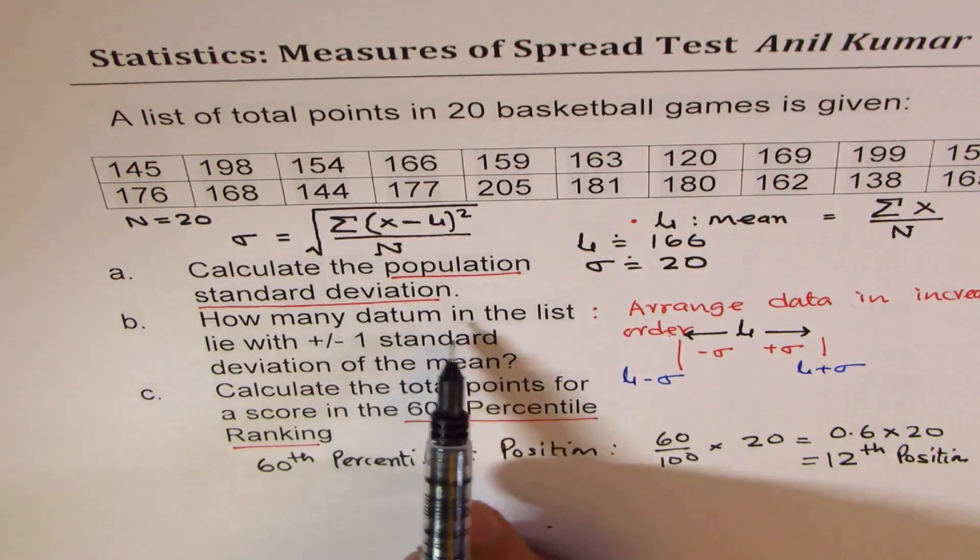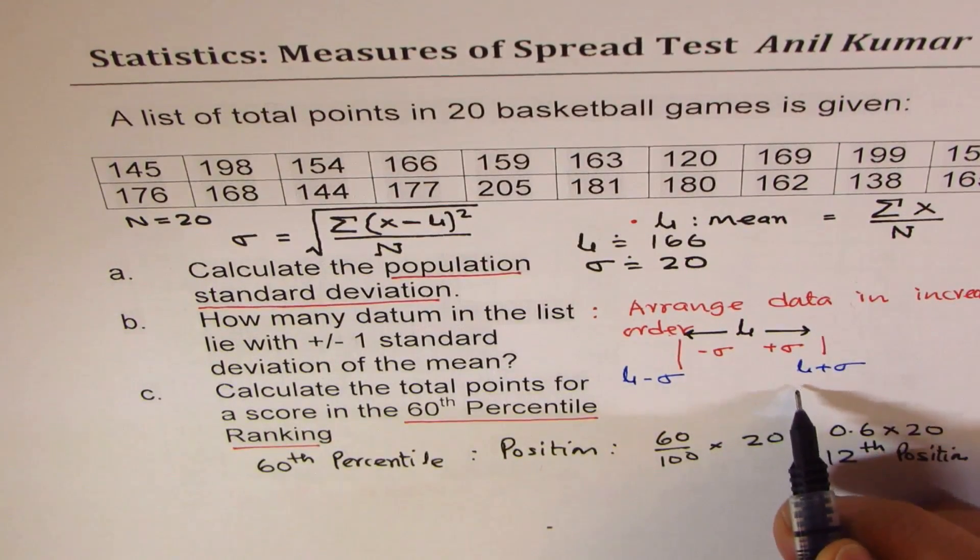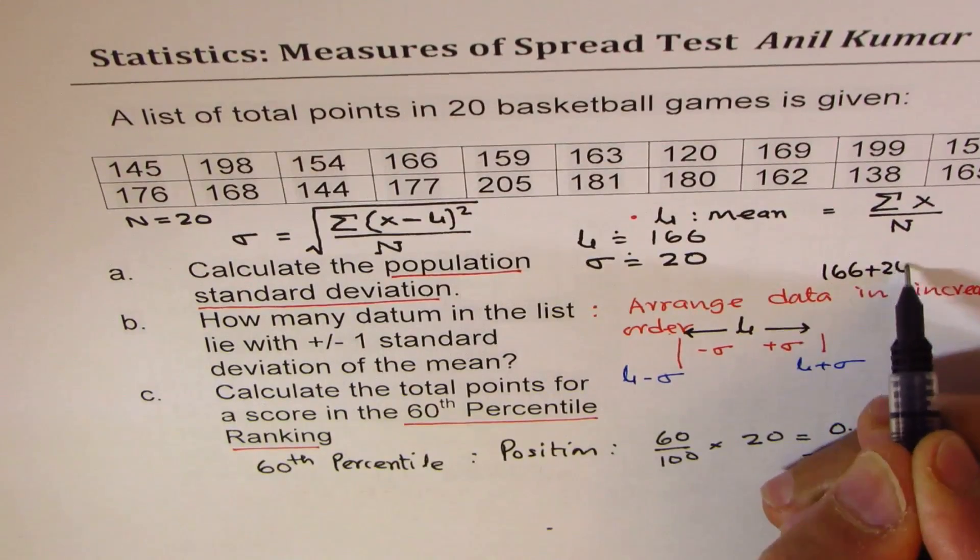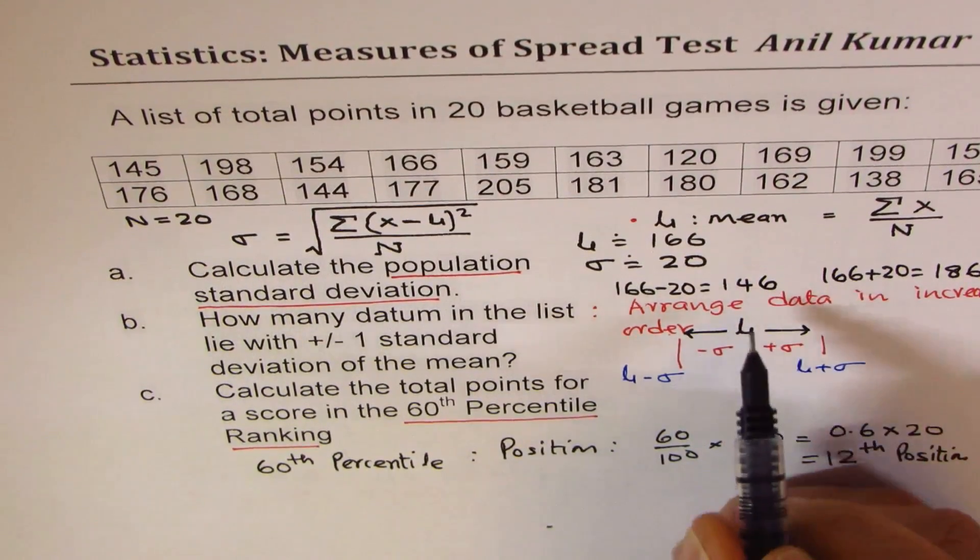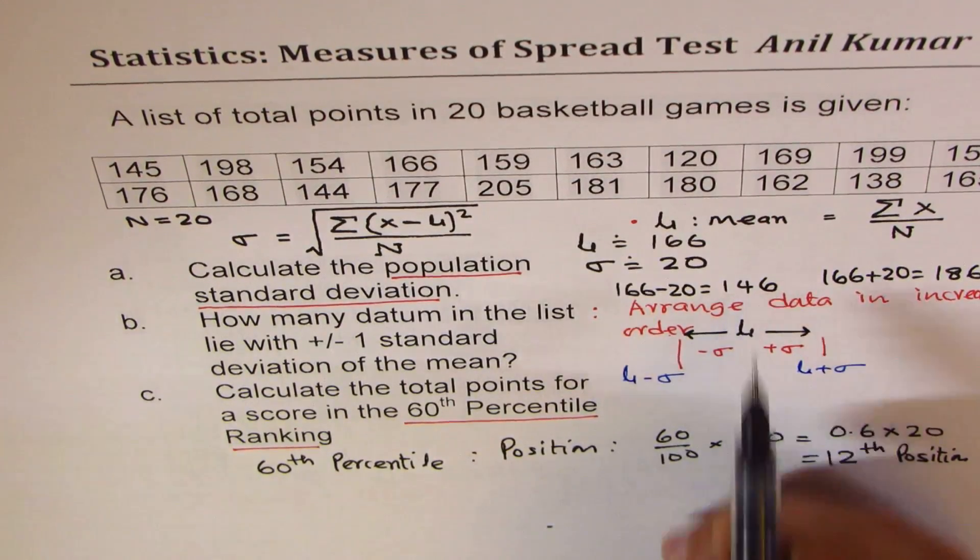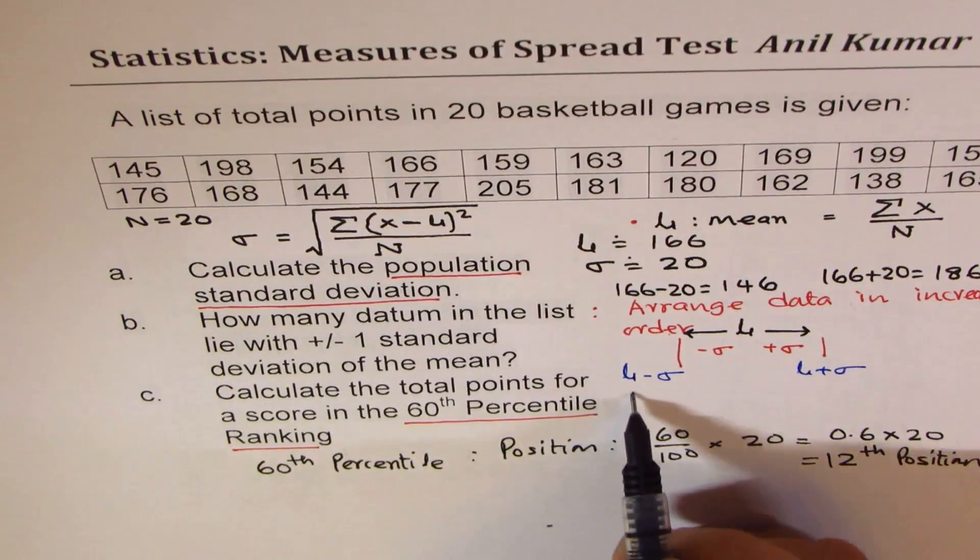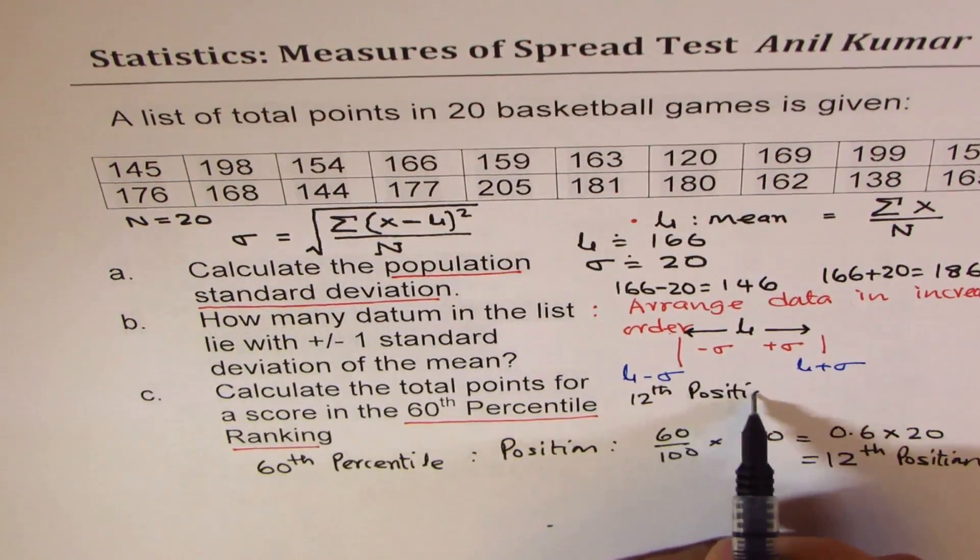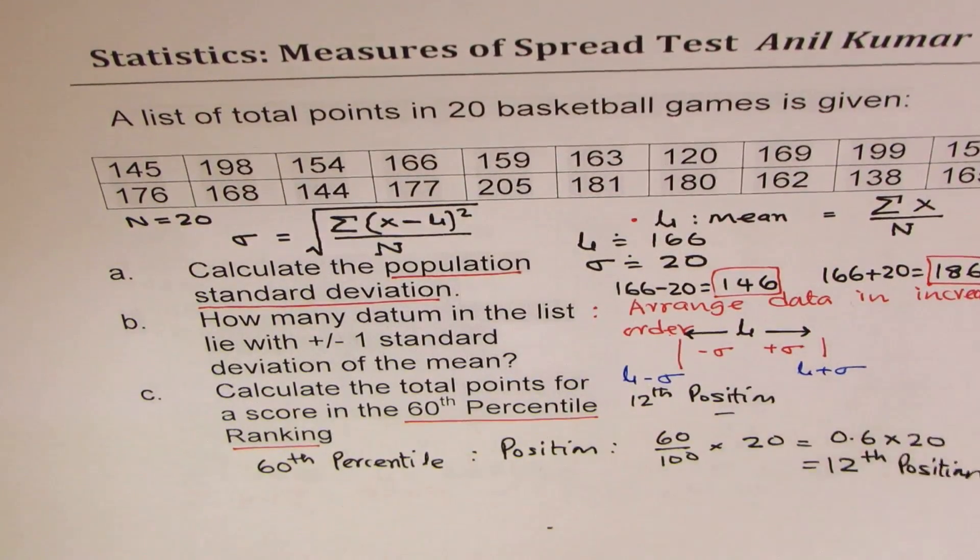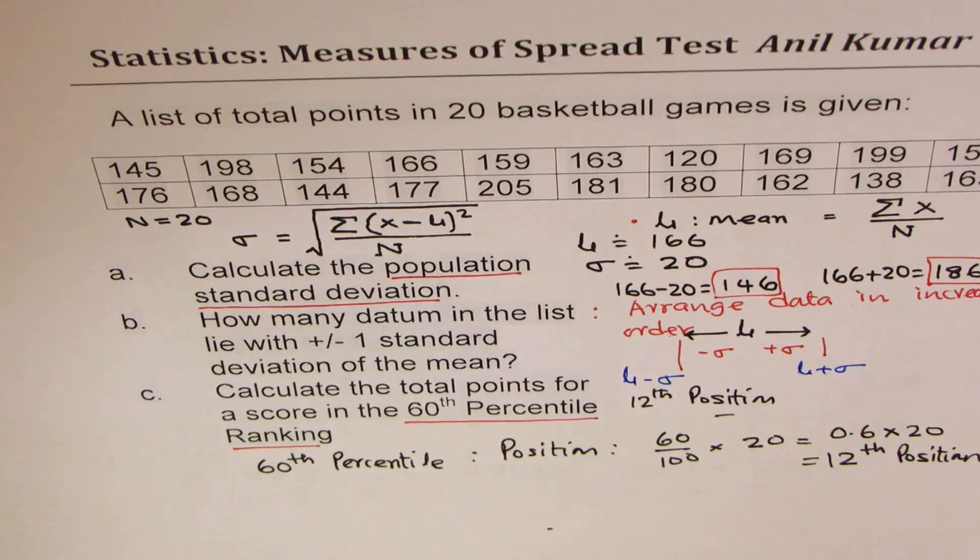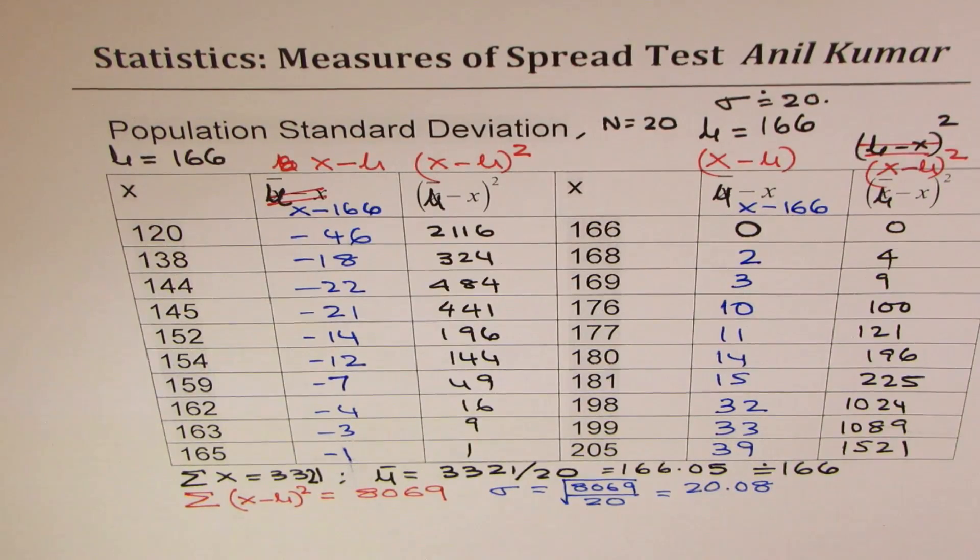What we have here is, first, standard deviation. Let me write down the answer: sigma is equal to 20 for us, and we also calculated that mean equals 166. These answers are approximate, they are good enough. Now the second part was, how many datum in the list are within plus minus. We have to do 166 plus 20. So if I do that, let me do that: it is 166 plus 20 which is 186, and here we have 166 minus 20 which is 146. So these are the values which we are looking forward to. And for percentile, we are looking at the 12th position. For part C, we are looking for 12th position.